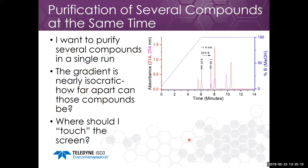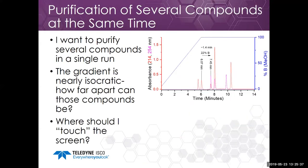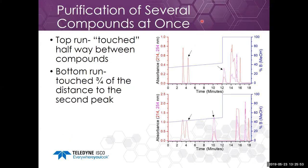Another question is: I want to purify several compounds at the same time — the gradient is very nearly isocratic, how far apart can these compounds be and where should I touch the screen? If I have a difference of about 1.4 minutes, that corresponds to about 22% B for a 150 mm column. In the top run I touched halfway between the compounds; in the bottom run I touched three-quarters of the way. Touching three-quarters of the way centered the two peaks a little bit better. The first peak came out starting to approach the early-eluting region but both gave acceptable results.